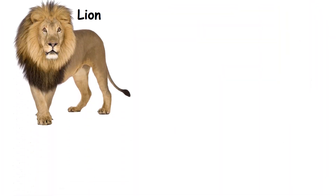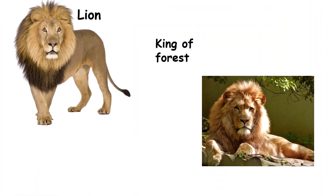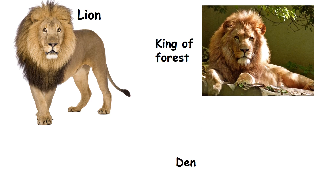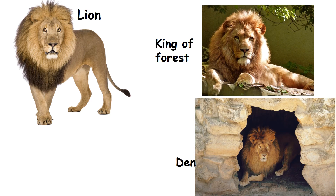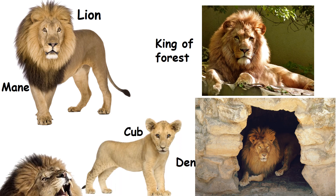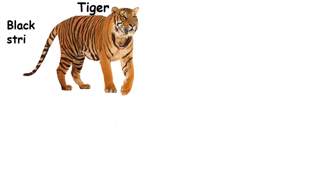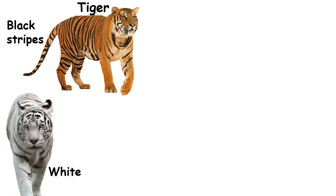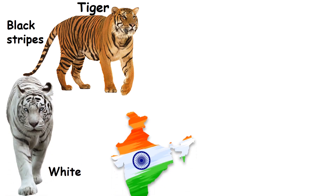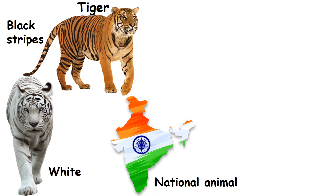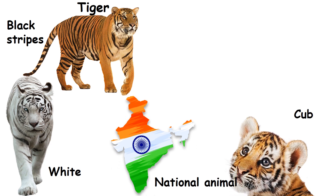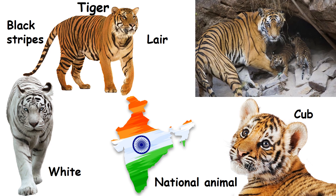Lion: It is called the king of the forest. The lion's home is called a den. Male lions have a mane. Its young ones are called cubs. Lion roars. Tiger: Tigers have black stripes on their body. Some tigers are white in colour. It is our national animal. Its young one is called a cub. The tiger's home is called a lair.